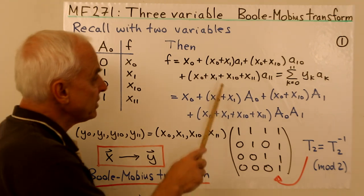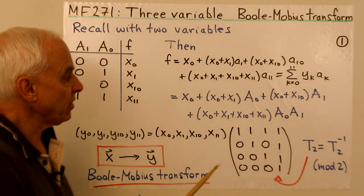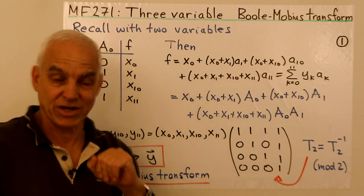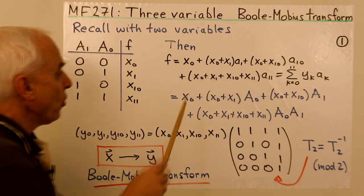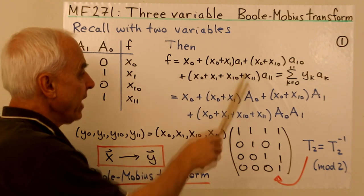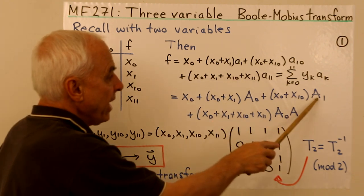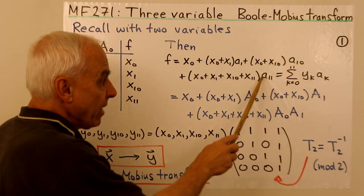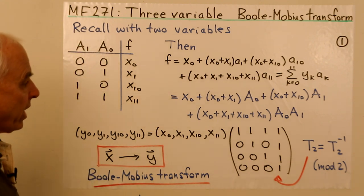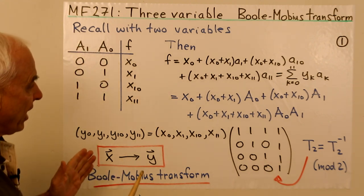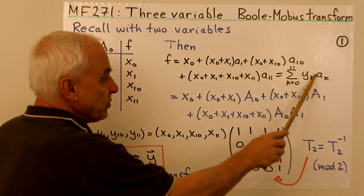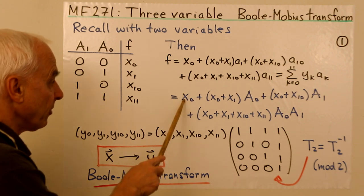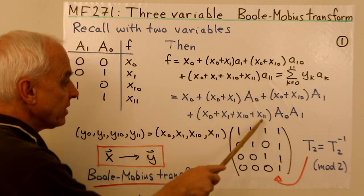I also remind you that we introduced this alternate notation for these terms that appear in the Boole polynomial expression, the a_i's. So x0 is actually a_0, and A0 is a_1, A1 is a_10 or a_2, and this thing here is represented by a_3. This gives us a correspondence between these coefficients, which we are calling y_k, going from 0 to 3. So that would be y0, y1, y2, and y3.